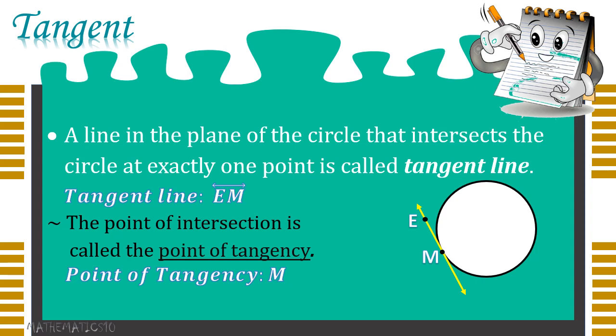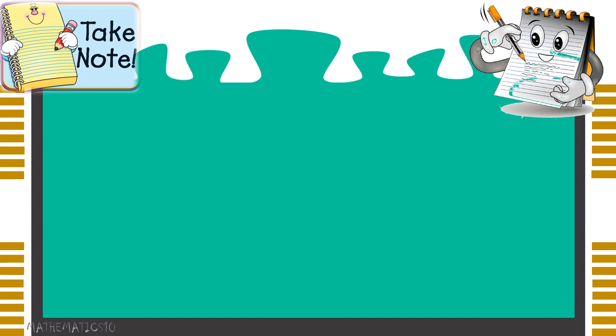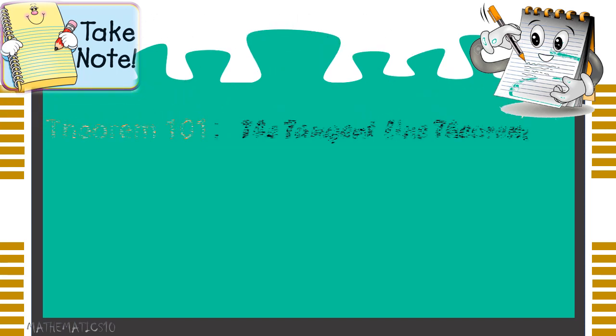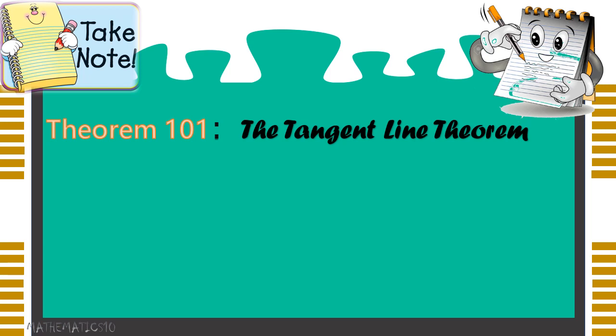Our point of tangency here in our illustration is the point of intersection. As you can see, our line EM intersects the circle at point M, so our point of tangency is point M. Now we have theorem 101, the tangent line theorem.